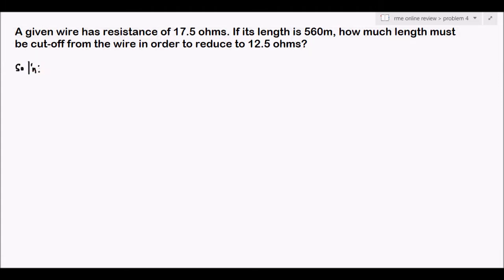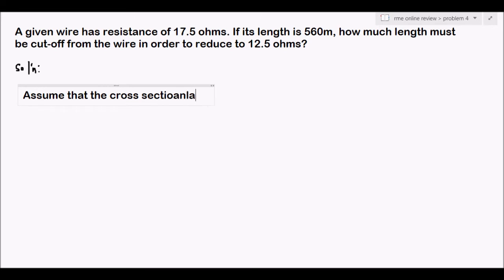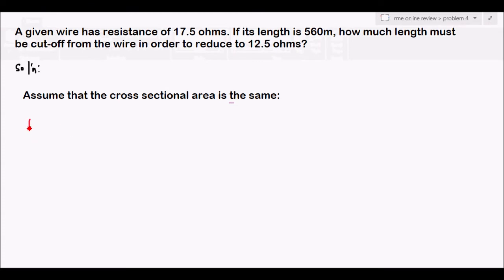For the solution, let's assume that the cross-sectional area of the wire is the same. This means that the one that is changing is the length. We can write our equation: R is equal to rho times L over A. Because the cross-sectional area is assumed to be the same and the wire is the same material, resistivity and area are constant.